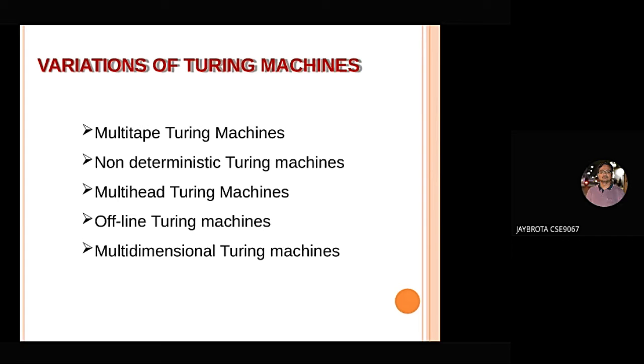The variations of Turing machines are the multi-tape Turing machines, non-deterministic Turing machines, multi-head Turing machines, offline Turing machines, and multi-dimensional Turing machines.